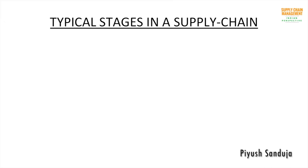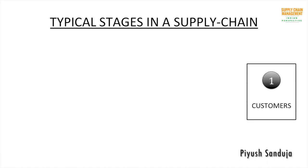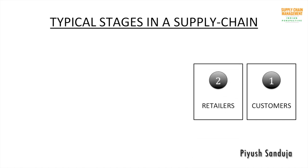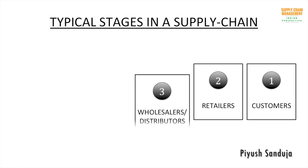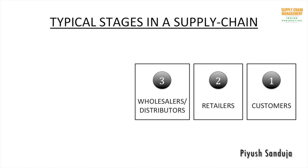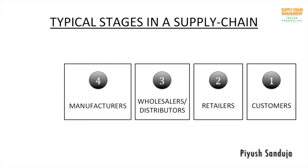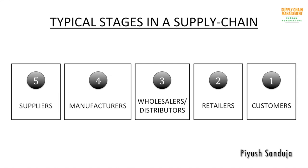Typically a supply chain has five stages. The first stage is that of customers. When a customer needs to buy a product, he or she goes to the second stage to buy it — that is retailers. Retailers are replenished by wholesalers and distributors, which comprise our third stage. The role of distributors and wholesalers is to aggregate supply from different manufacturers — that is stage four — and distribute to different smaller retailers. Manufacturers generally procure raw materials, contractual labor, and equipment from different suppliers, which comprise the fifth stage. A supply chain has either all five stages or a subset depending on the customer's need and supply chain design.